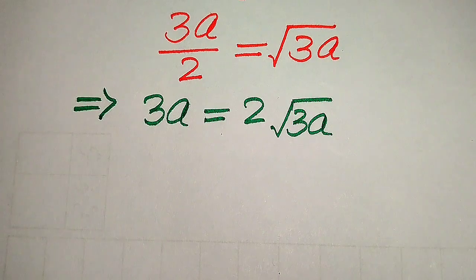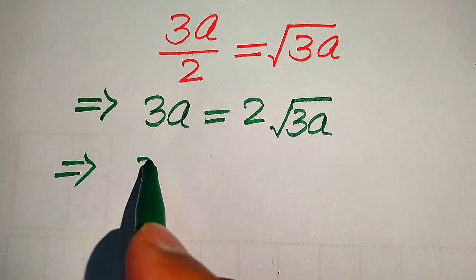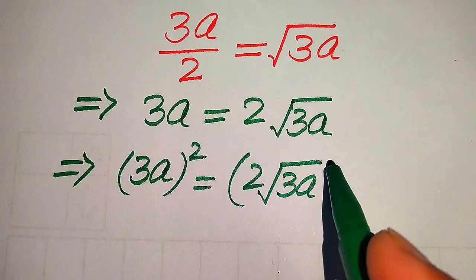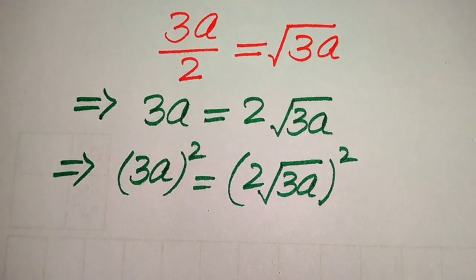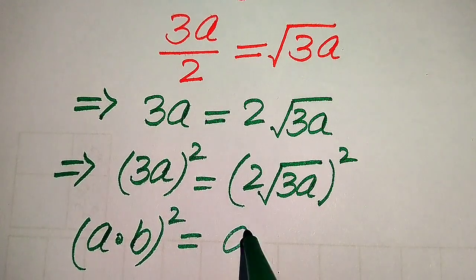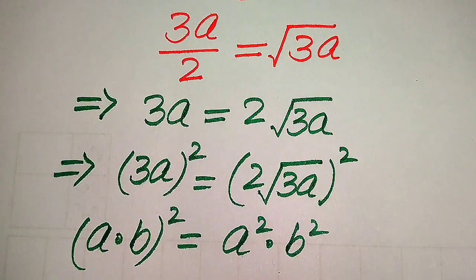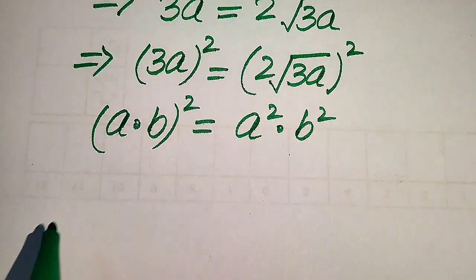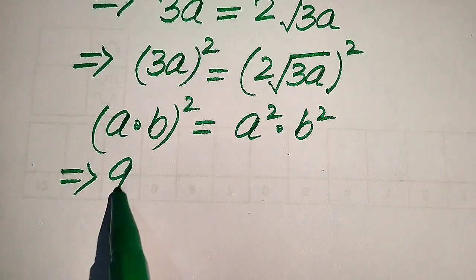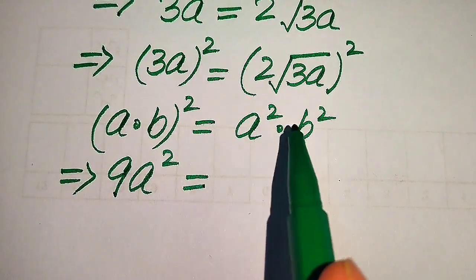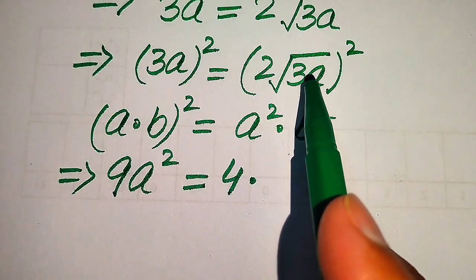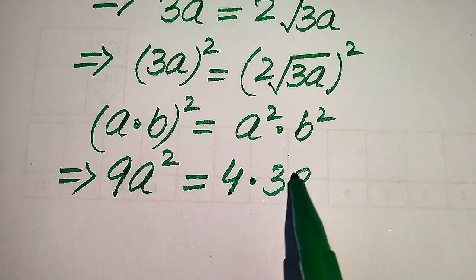Our first target is to remove the square root sign from the right hand side. For this we need to take squaring on both sides. When we square both sides and apply the formula (ab)² = a²b², we break the square sign on both terms. The square of 3 becomes 9, the square of a becomes a², the square of 2 becomes 4, and the square of the square root of 3a gives us 3a.